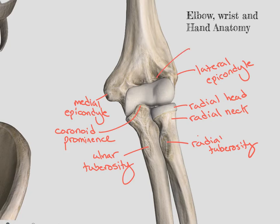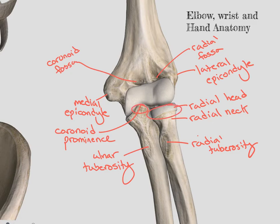Also on the humerus, we have our radial fossa, where the head of the radius sinks in. And then on the other side, we have our coronoid fossa, which correlates again with our coronoid prominence and the head of the radius.